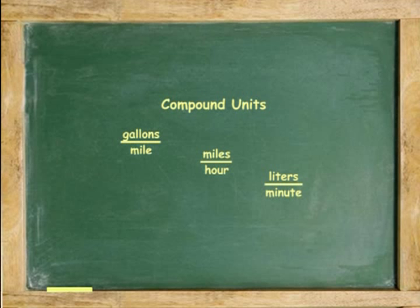Now let's try converting compound units. A compound unit has more than one unit. For example, speed in miles per hour is a compound unit because it contains miles and hours. Compound units may also be converted using dimensional analysis by converting one unit at a time.